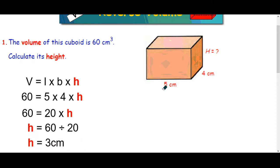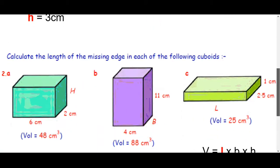And again you can double check. It's 5 times 4, 20 times 3, 60. That works. Again notice we're not putting cubic centimeters up here. Height is just a measure of length. That would just be 3 centimeters.